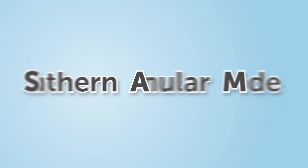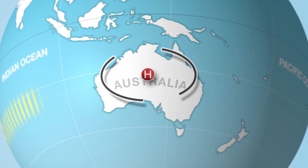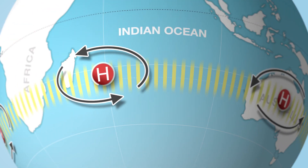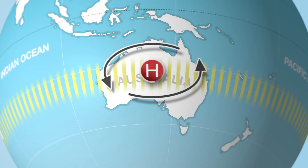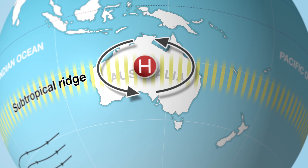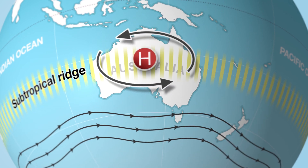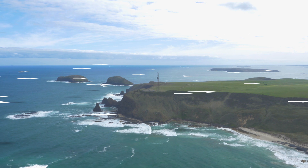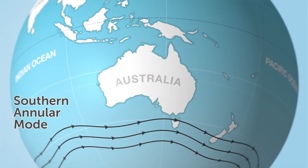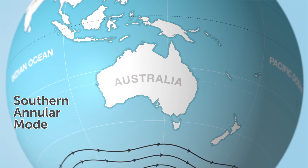So what is the SAM? Well, in the Southern Hemisphere, a belt of high pressure extends right around the globe in the subtropics. We call this the Subtropical Ridge. On the southern side of this ridge there are strong westerly winds — the roaring 40s and the furious 50s. SAM refers to the unusual north or south shift of these winds.